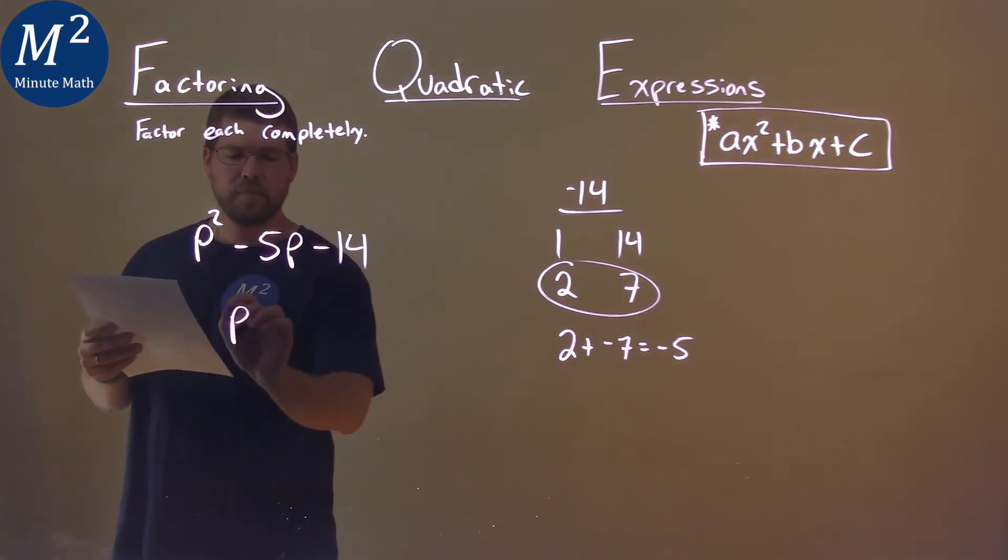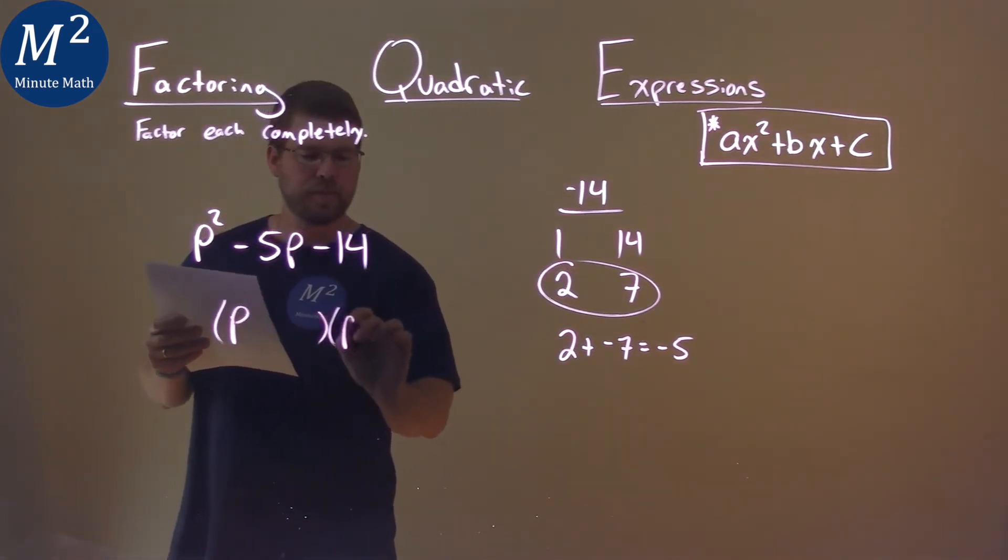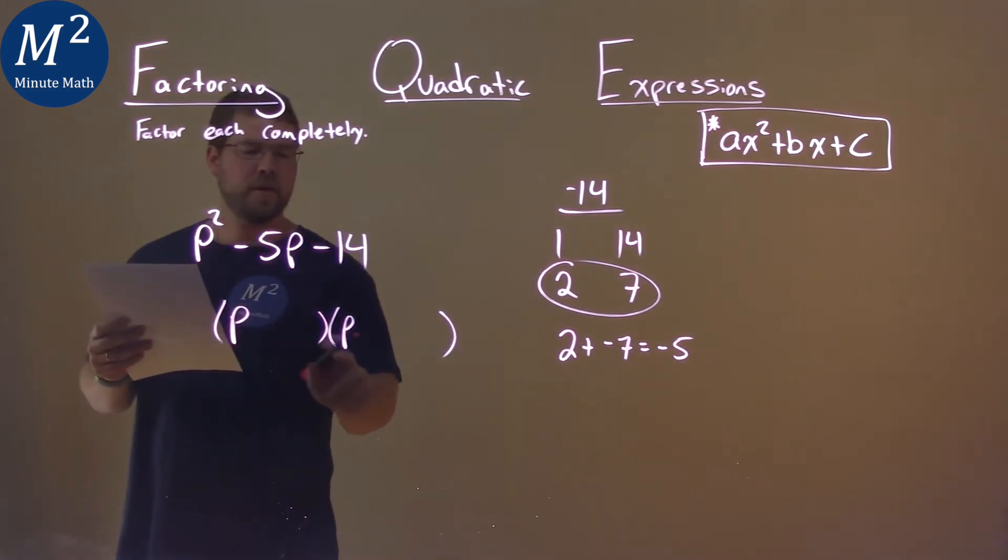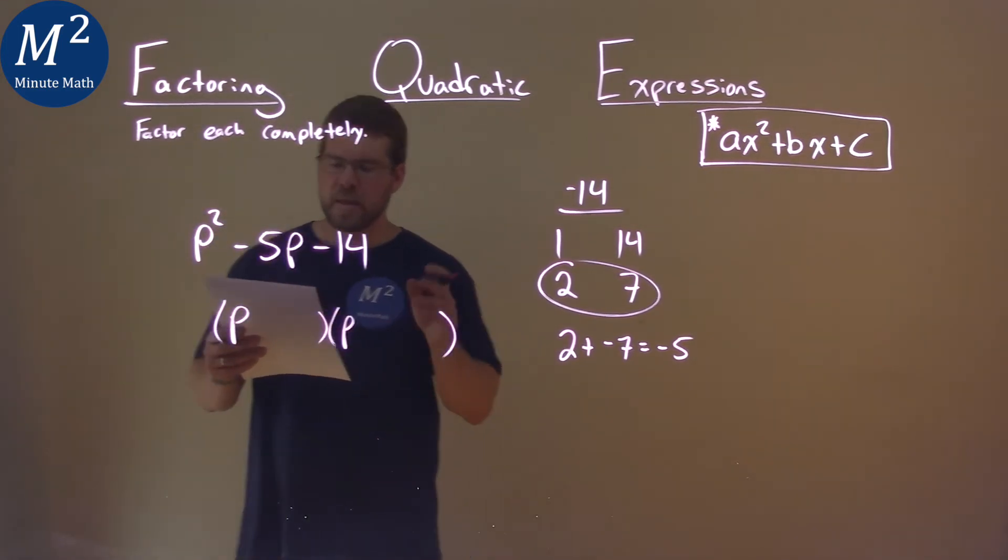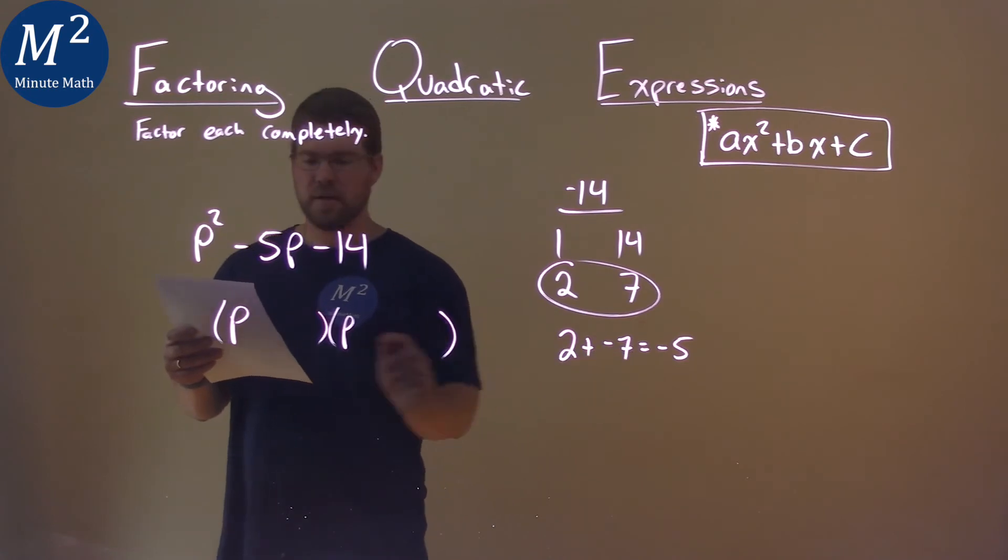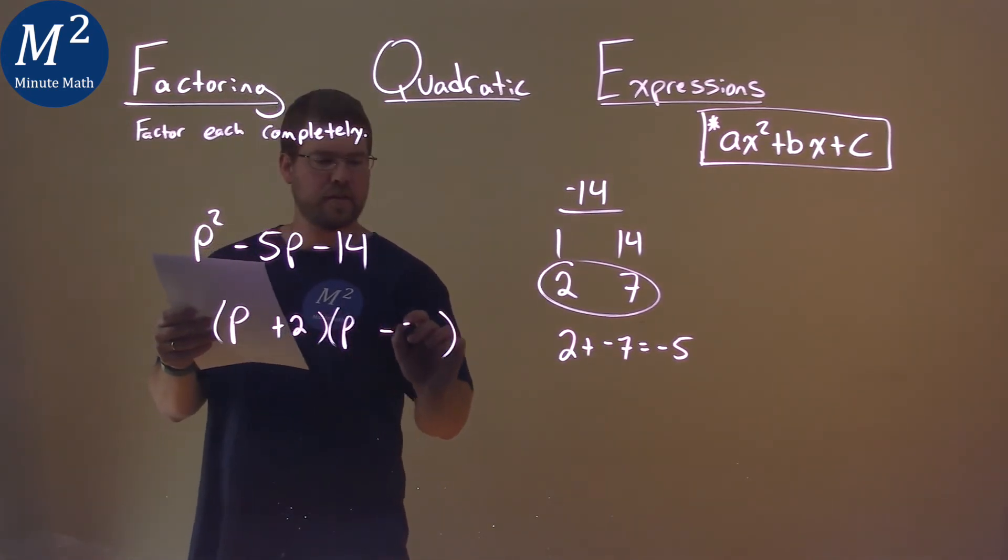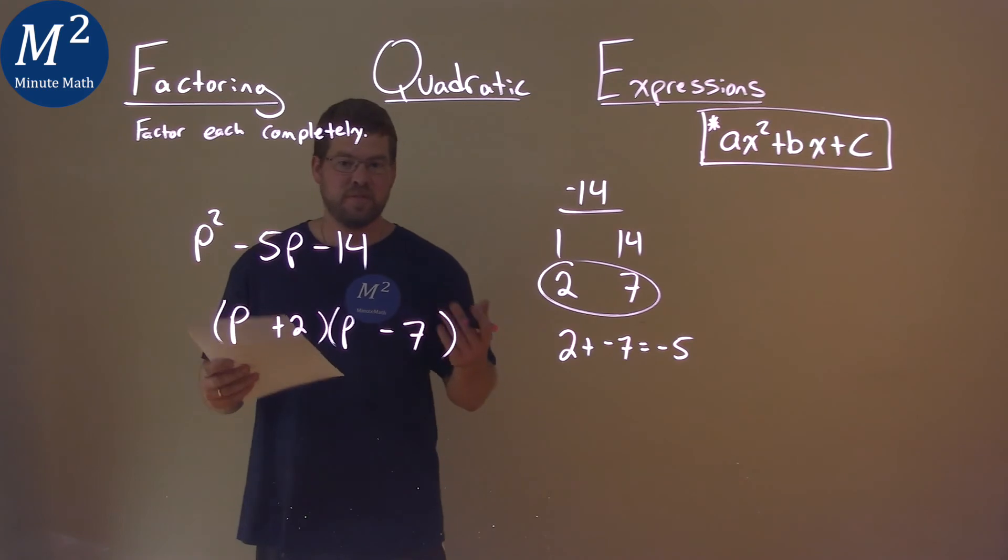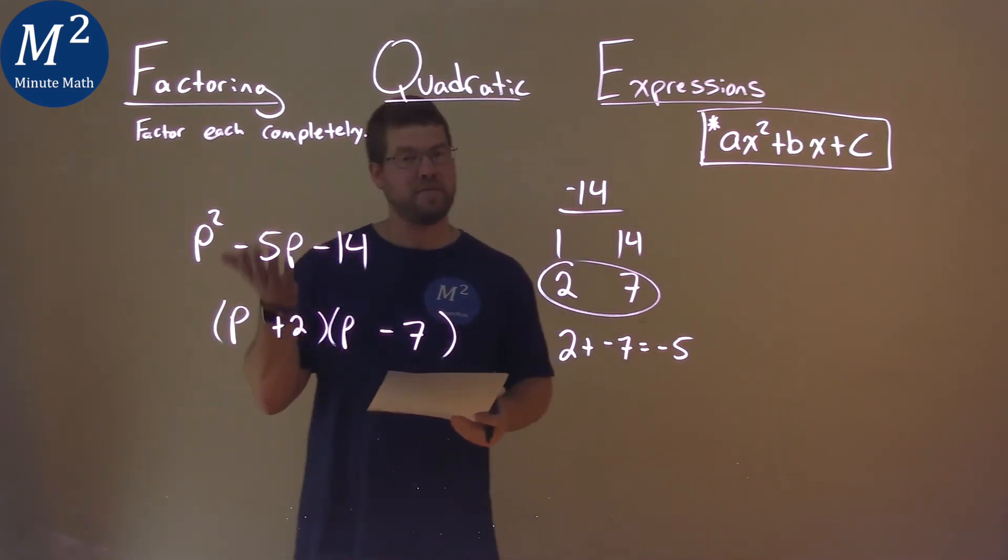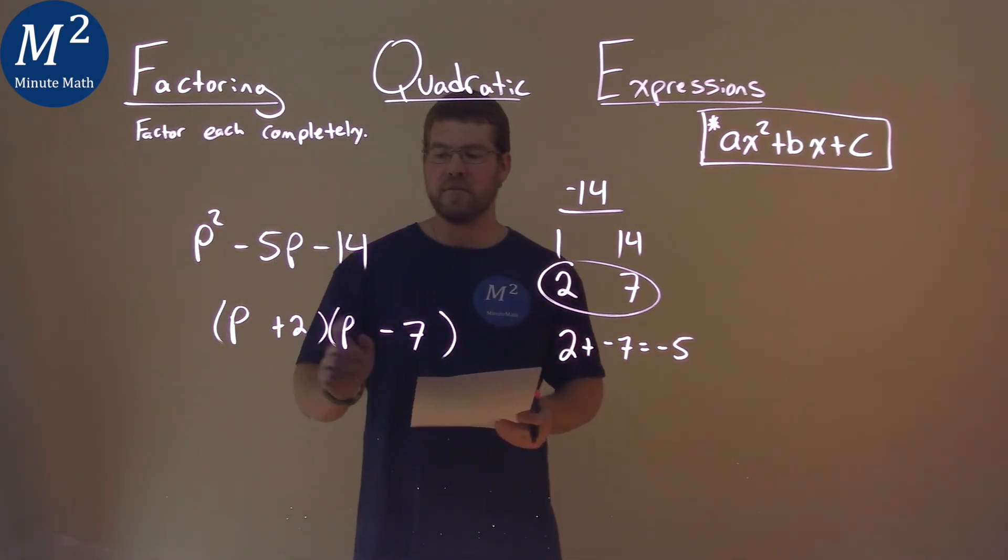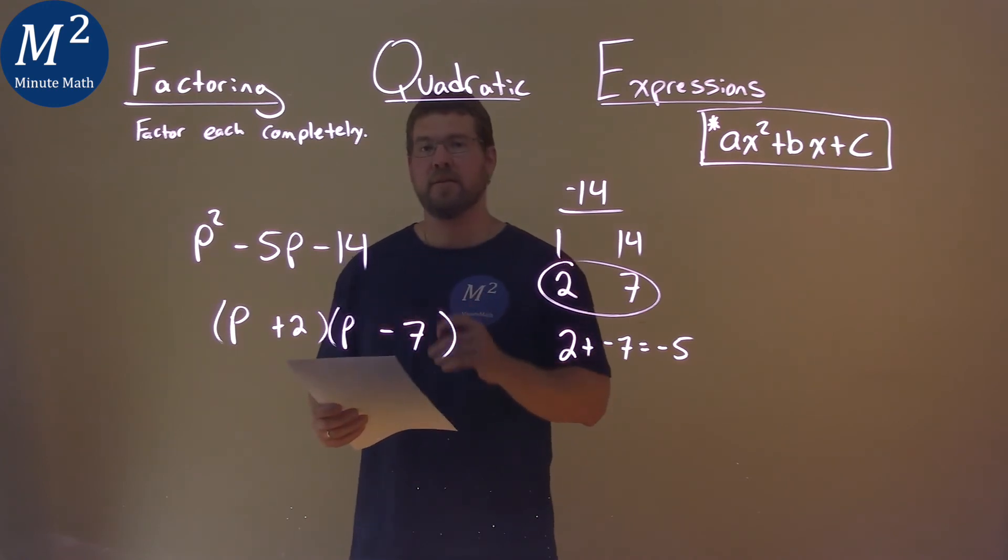I'm going to set this up in my standard factored form with the p's here multiplying. Then I have to use my combination here. I have a positive 2 and a minus 7, and we've actually factored this. Our final factored answer now is just p plus 2 times p minus 7.